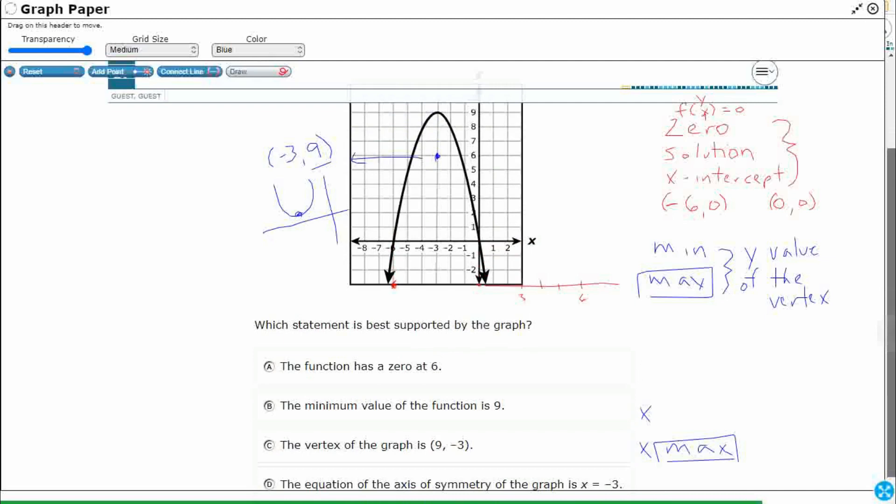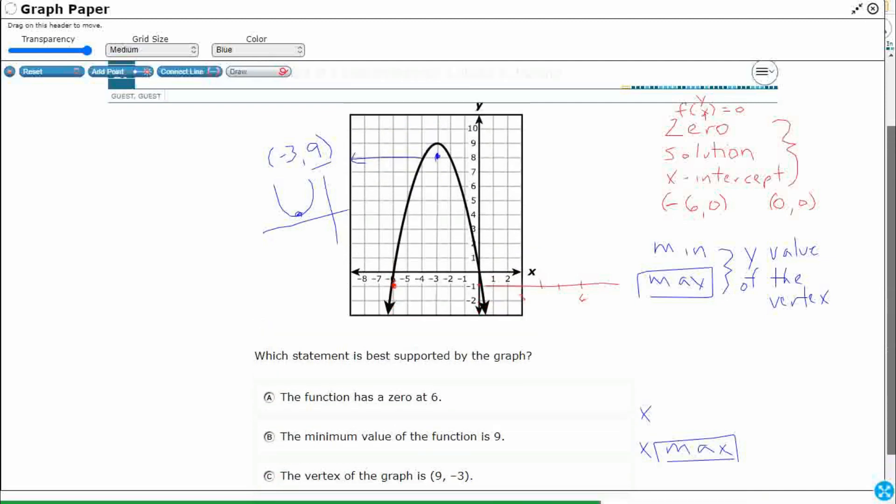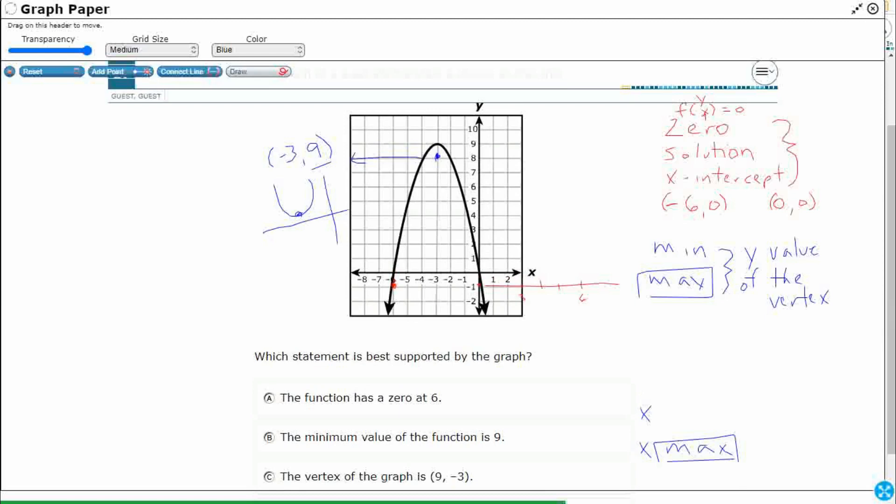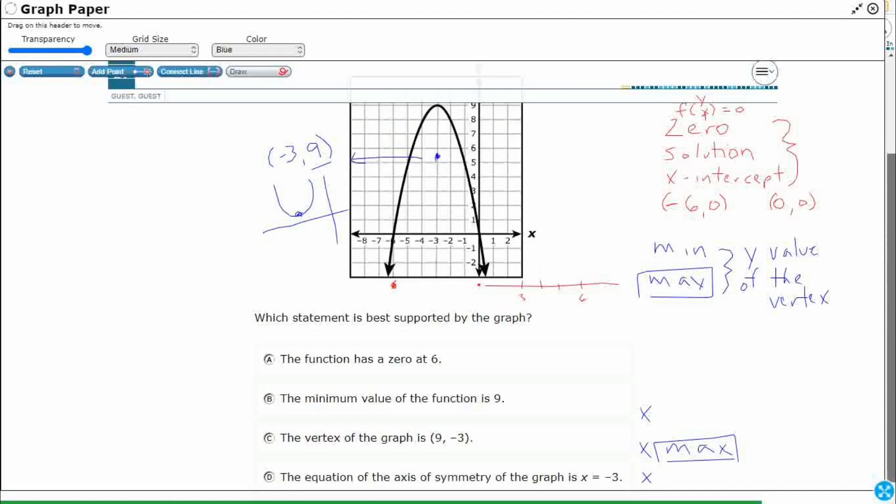So let's check out c. The vertex of the graph is 9, negative 3. Okay, we just figured that out. And look, they flipped those. They flipped it into the 9. There is no 9. 9 is not even on the graph. They flipped the x and the y value. So let's hope it's d here.